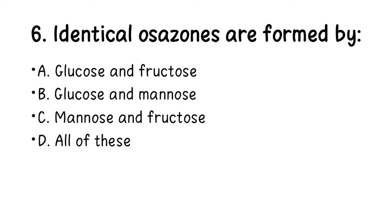Number 6. Identical osazone crystals are formed by: A. Glucose and fructose, B. Glucose and mannose, C. Mannose and fructose, D. All of the above. The right answer here is all of the above — they are all correct.